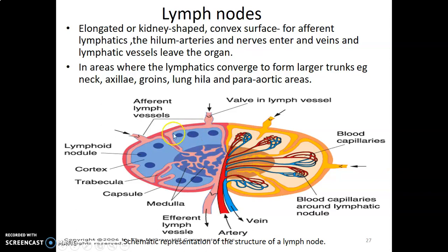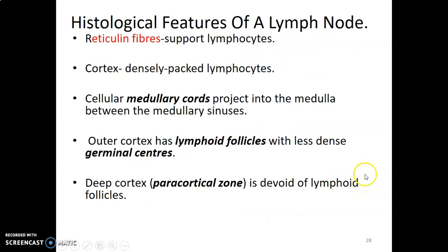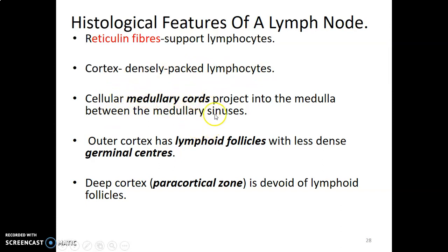Histologically, like other immune organs, the lymph node has reticulin fibers to support lymphocytes. It has an outer cortex densely packed with lymphocytes arranged in lymphoid nodules, and a medulla containing medullary cords and medullary sinuses. The sinuses are endothelial-lined vascular channels, with the cords situated in between them.